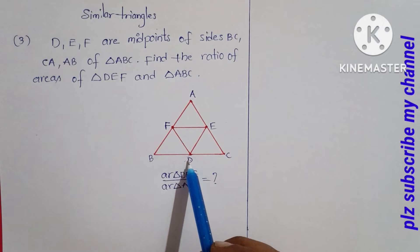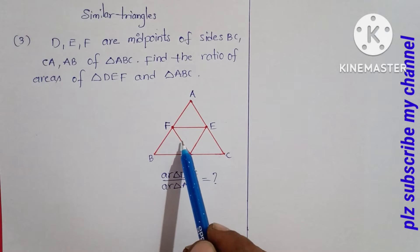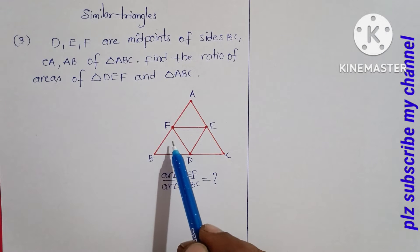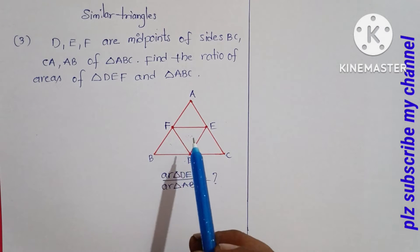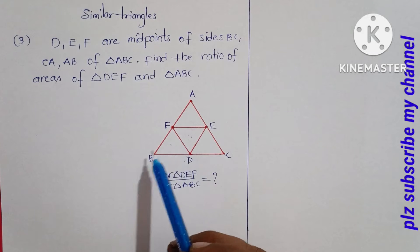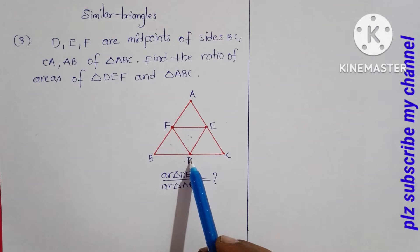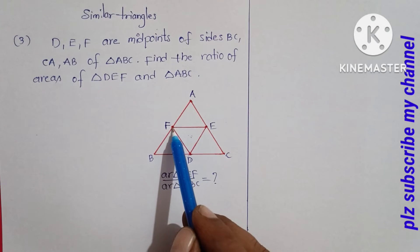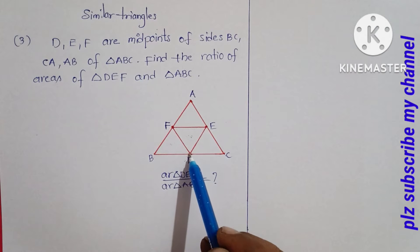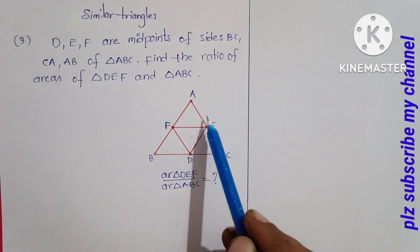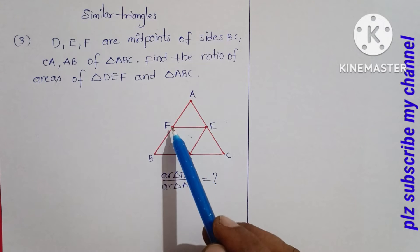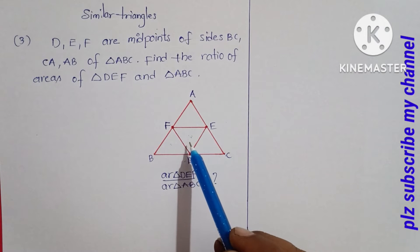In parallelogram BDEF, DF is the diagonal. The diagonal of a parallelogram bisects it into two equal parts, so the triangle areas on each side are equal. Similarly, in parallelogram DCEF, the diagonal bisects it and the triangle areas are equal. This gives us equation 1 and equation 2.